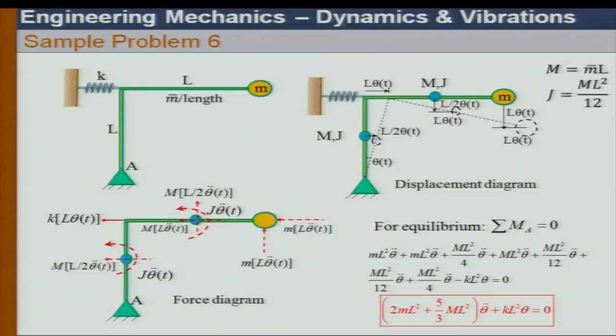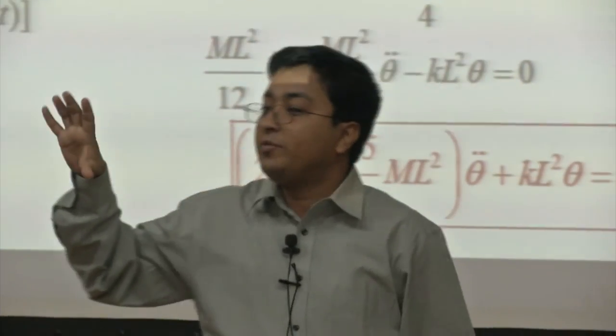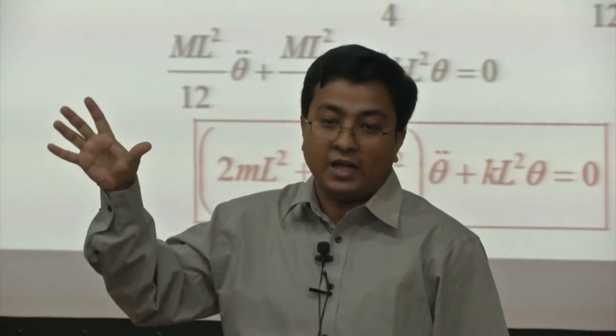Now the last problem — a bit complex. We have a frame system with two bars forming an L-shape, attached by a spring, with distributed mass everywhere and a lumped mass at the end. Can I set up the equation of motion?